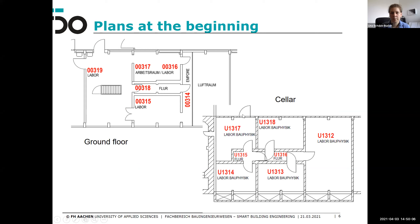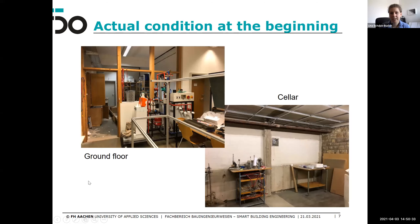Here you can see the old plans of the rooms. On the left you see the ground floor with four rooms connected to each other and some stairs going downstairs. On the right you see the same rooms in the cellar — five rooms, so it's quite a big lab. Here you can also see some photos of the actual condition at the beginning. The ground floor needed tidying up, and the cellar on the right was more or less unused. These rooms had not been used for any practical course for many years and had just been used as storage.